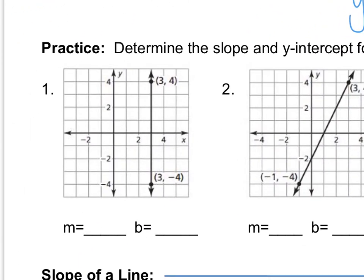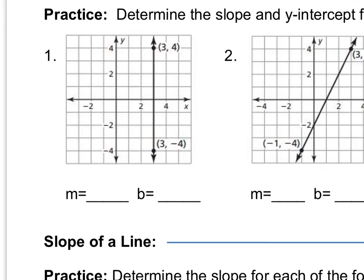We're supposed to identify the slope and y-intercept for several graphs. For problem 1, I have a vertical line. The y-intercept is where the graph crosses the y-axis. Notice my line and the y-axis are parallel — they never cross. So this line does not have a y-intercept; we write 'none.' We cannot write that the y-intercept is 0, because that would mean it crosses the y-axis at 0.